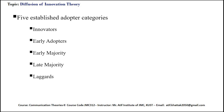The third stage is the early majority. Early majority are those people who are rarely leaders but do adopt new ideas before the average person. They typically need to see evidence that innovations work before they are willing to adopt. A strategy to appeal to this population includes success stories and evidence of the innovation's effectiveness.